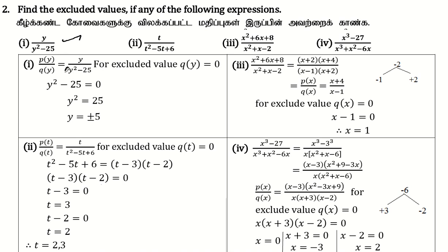So y square minus 25 is the denominator. y square minus 25 equals 0, then y square equals 25. y equals plus or minus 5. The excluded value is equal to plus or minus 5.